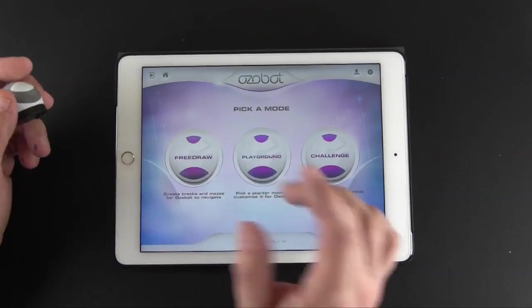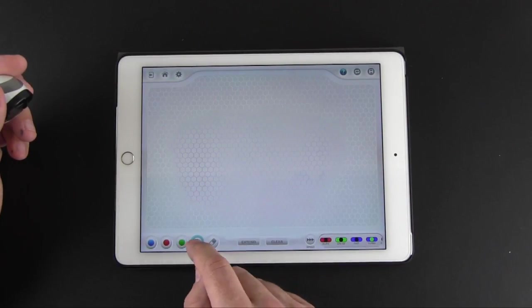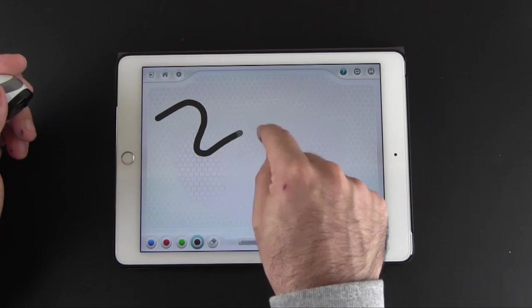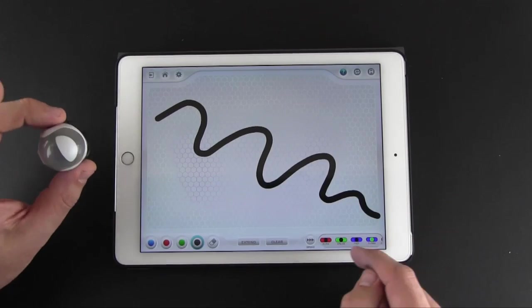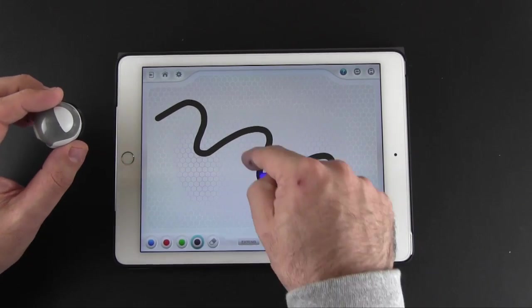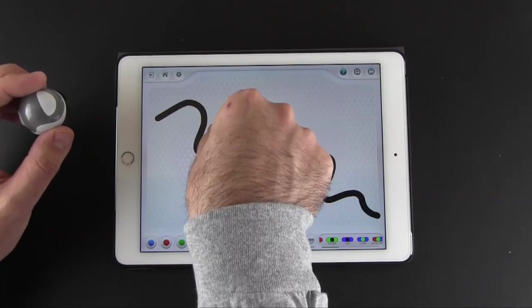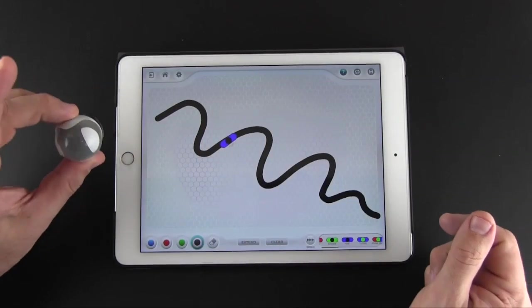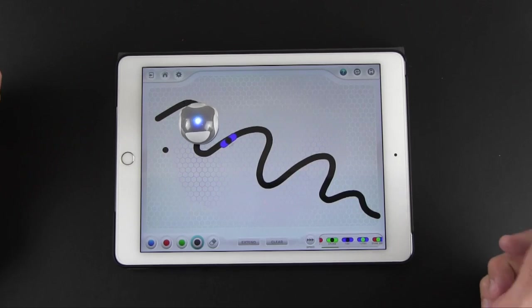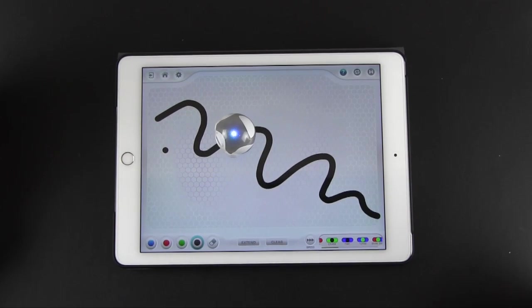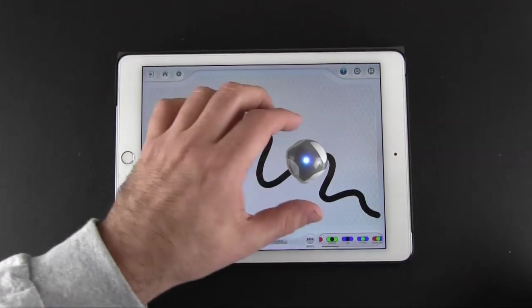Basically you've got three different things that you can do in here. There's free draw so here you just have a piece of paper and you can choose colors and draw a track. And again you can add in things like making it go faster and you can actually rotate this to line it up. So now if I put him down he should follow this track pretty good. You can see when he gets to the blue line he will hopefully speed up and go a little bit faster.